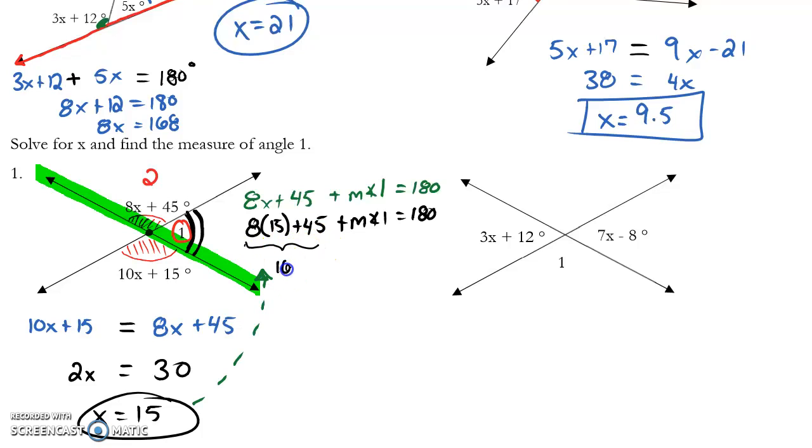When I solve this, that's 165 plus the measure of angle 1 equals 180. So this being 165 means that this here is a 165 degree angle. Subtract 165 from both sides. Measure of angle 1 equals 15 degrees. There's my two-part answer. Measure of angle 1 and x equals 15.